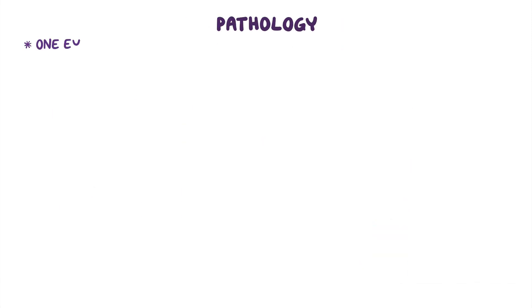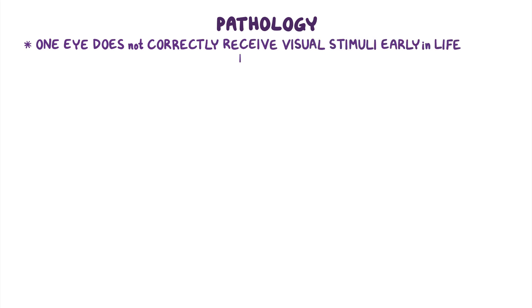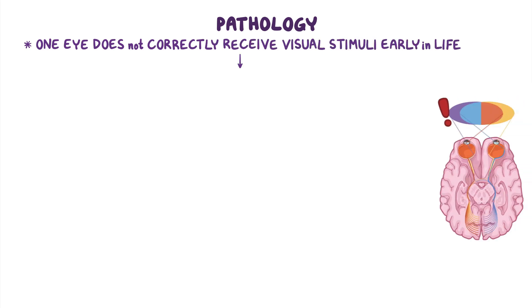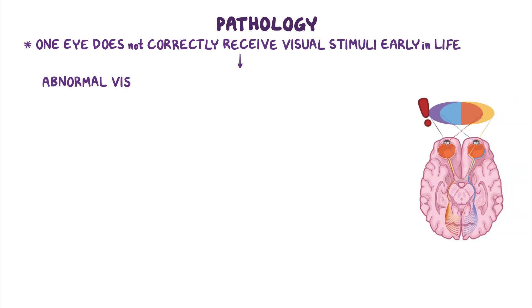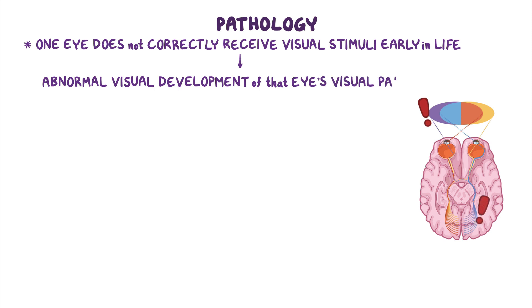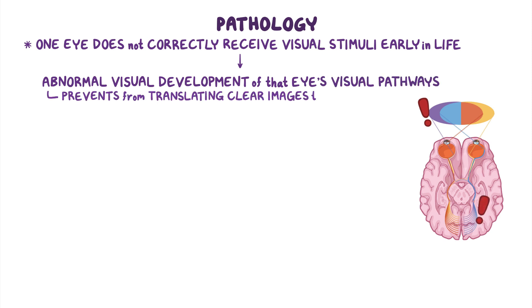The pathology of amblyopia usually starts when one of the eyes does not correctly receive visual stimuli early in the client's life. This results in abnormal visual development of the eye's visual pathways, which prevents them from translating clear images to the visual cortex of the brain.